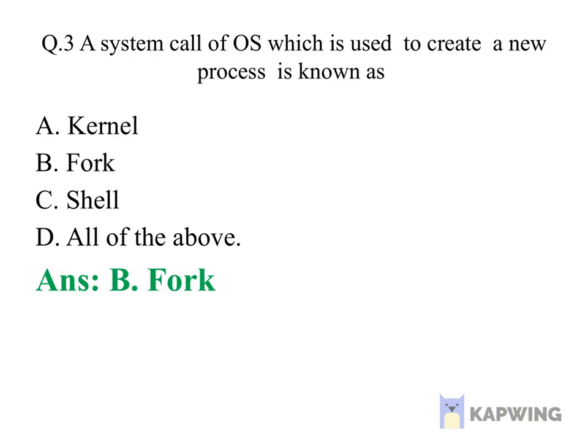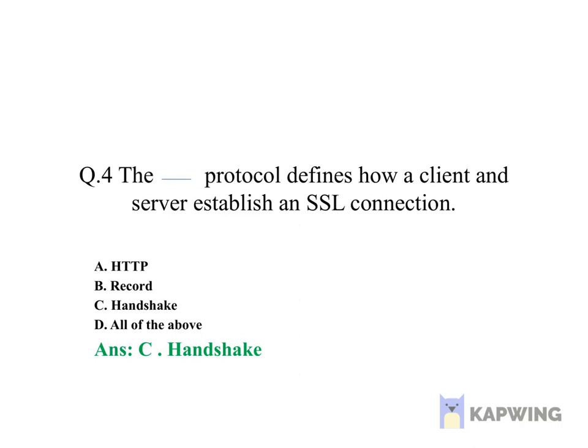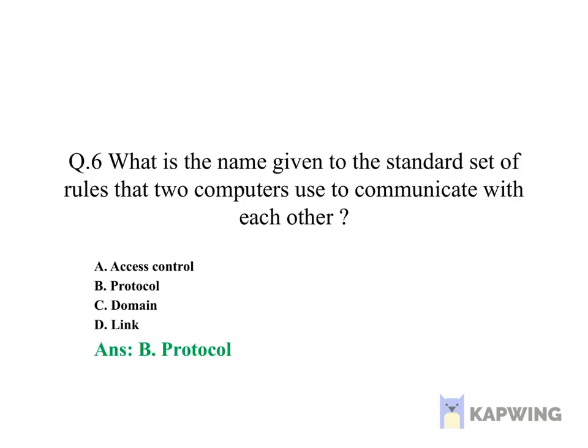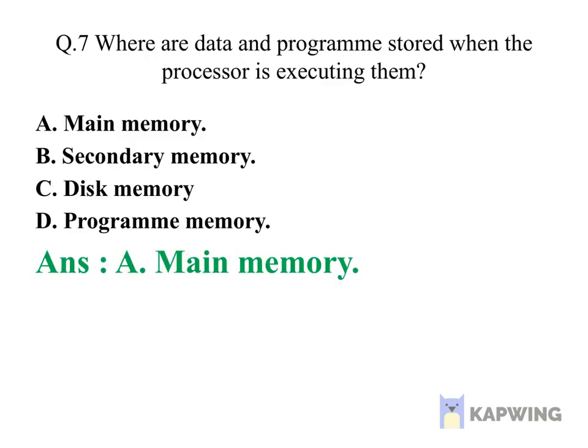Question number three: correct answer is option B, fork. Question number four: correct answer is option C, handshake. Question number five: correct answer is option D, downsizing. Question number six: correct answer is option B, protocol. Question number seven: correct answer is option A, main memory.